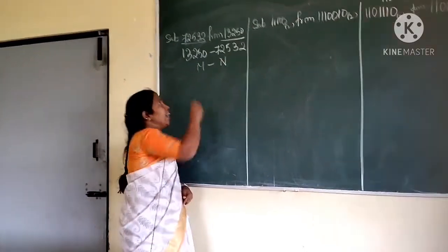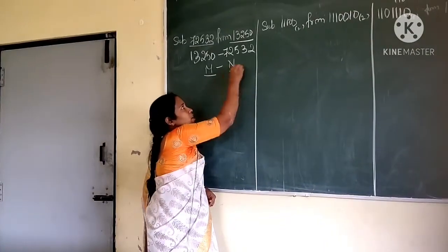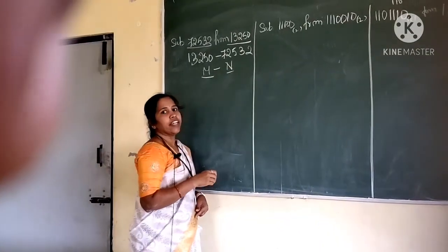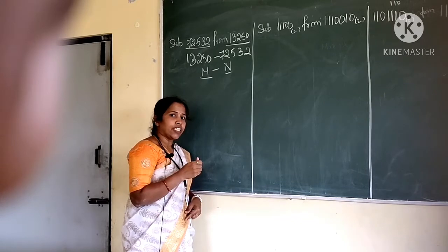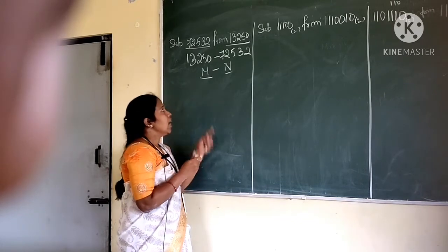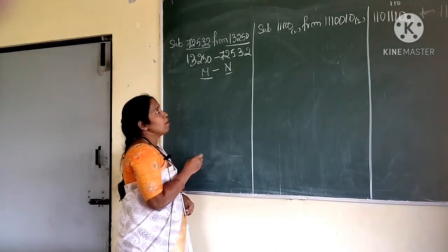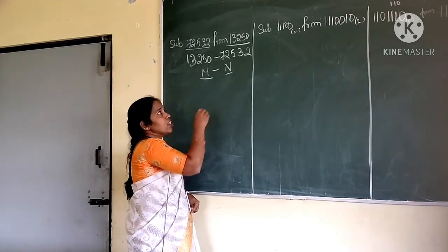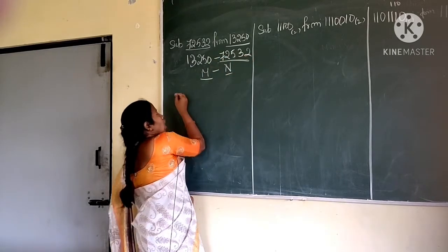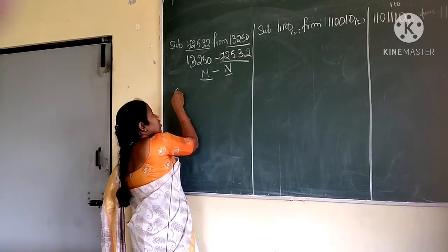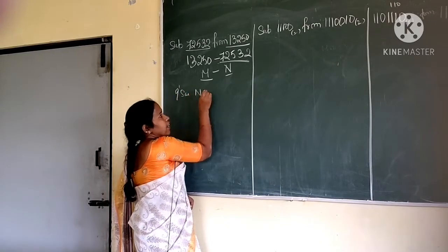First step is: adding m with r's complement of n. Now, in this case we need the 10's complement. So the 10's complement of n — first I should find out the 9's complement of n.